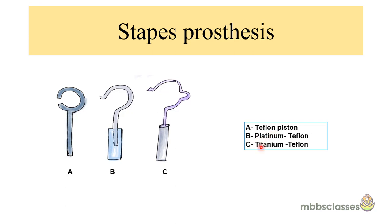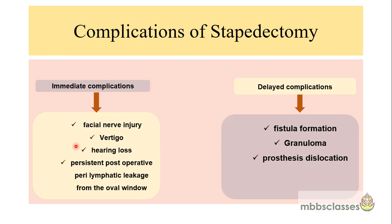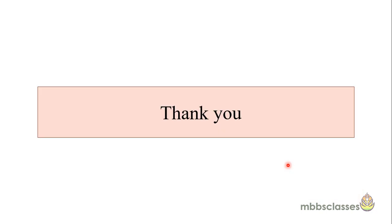Stapes prostheses come in various shapes and materials, including Teflon piston, platinum piston, or titanium-Teflon prosthesis. Post-operatively, patients are advised to keep the head elevated, follow light physical activity for the next couple of weeks, avoid straining during defecation, and avoid forceful nose blowing. Post-operative vertigo is managed with medications. Complications of stapedotomy are divided into immediate and delayed: immediate complications include facial nerve injury, vertigo, hearing loss, and persistent perilymphatic fistula from the oval window; delayed complications include fistula formation, granuloma formation, and prosthesis dislocation.